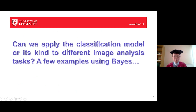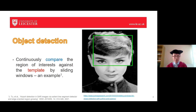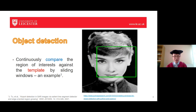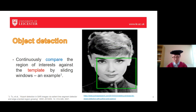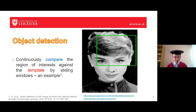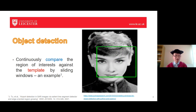Some people may ask: can we really use this classification model and apply these mathematical equations to different image analysis tasks? Yes, we can, and I'm going to show you a few examples using Bayes. The first example is object detection — we continuously compare the region of interest against a template by sliding a window. The green window slides from top to bottom in order to detect faces. The second example is related to object tracking: the target is to select the area most similar to the region of interest. We have three human subjects moving around, and we wish to continuously track these three persons. The job is not easy because we continuously suffer from occlusion. This work was published in the 2020 TIP, investigating grayscale foreground tracking using sparse representation.